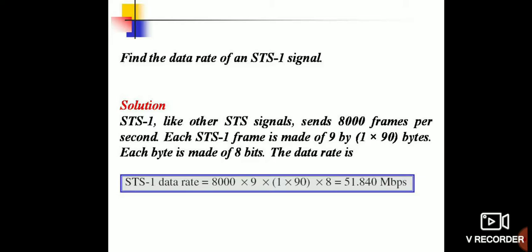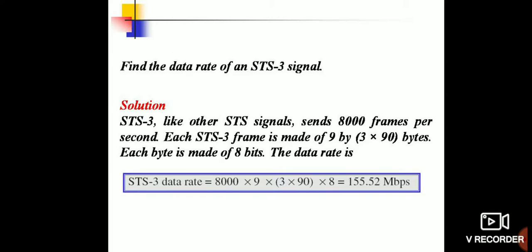Find the data rate of the STS signals. Like the other STS signals, it sends 8000 frames per second. Each STS frame is made by 9 rows by 90 bytes. Each byte is made of 8 bits, so data rate is 8000 times 9 times 90 times 8 equals 51.84 Mbps. Find the STS-3 signal similarly we can get.